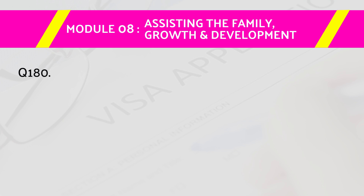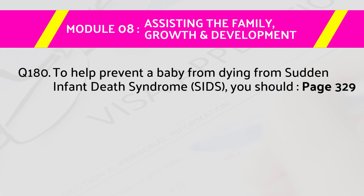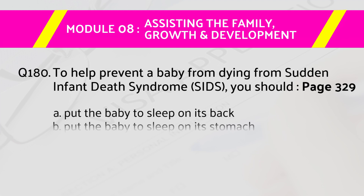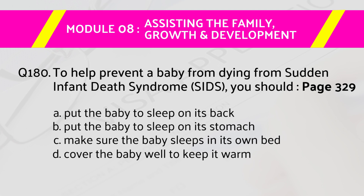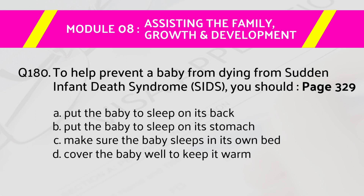Question number 180: To help prevent a baby from dying from sudden infant death syndrome (SIDS), you should — page number 329. Answers are: A) put the baby to sleep on its back, B) put the baby to sleep on its stomach, C) make sure the baby sleeps in its own bed, D) cover the baby well to keep it warm. The right answer is A, put the baby to sleep on its back.